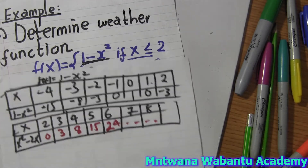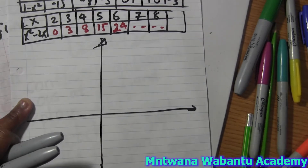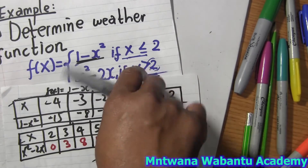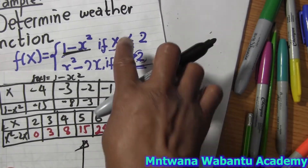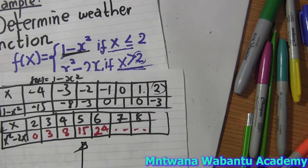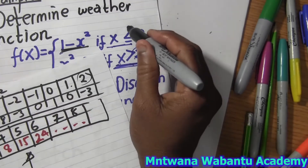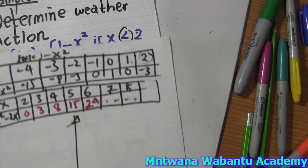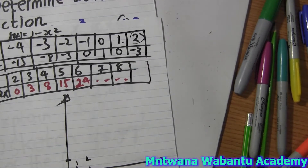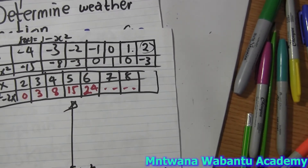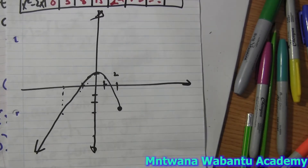So now let's draw a Cartesian plane. We need to be careful: x greater than or equal to 2 means 2 is included — draw a solid circle. For the first piece, when x = 2, y = -3, so we plot that as a solid closed point. When x = 1, y = 0. When x = 0, y = 1. The graph is concave downward.